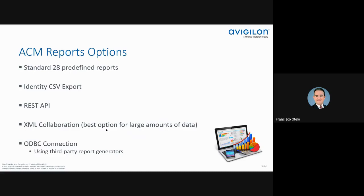Here's what I want to cover: the ACM report options. What options do we have to report in ACM? We have the standard 28 predefined reports — the CAN reports that come with the application. We can use the identity CSV export as a report, which generates an Excel file. REST API is not my favorite — there are some performance issues there. XML collaboration is one of the best options for large amounts of data. And ODBC connection — basically, here's my database, connect to it and develop your own reports.